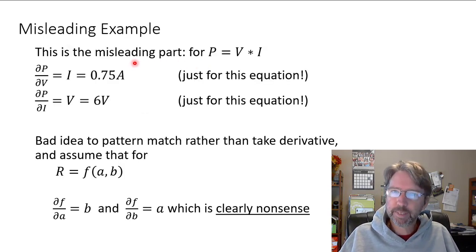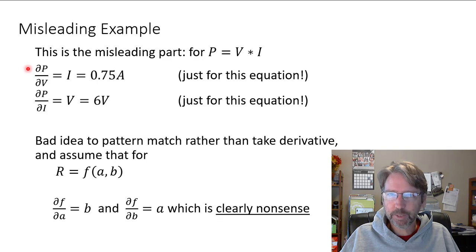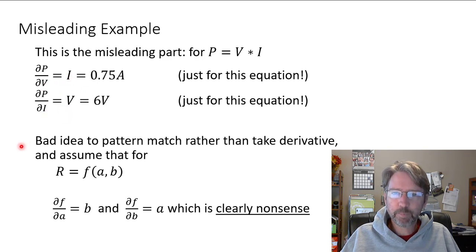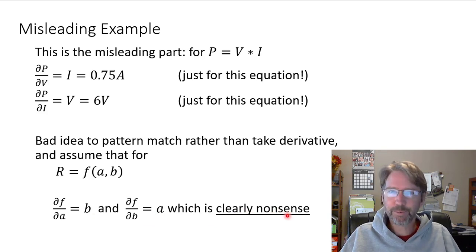This is why I call it a misleading example — students don't like to do calculus, but you have to; you're engineers. The misleading pattern here is: the partial of power with respect to voltage is current, and the partial of power with respect to current is voltage. People pattern-match that instead of actually taking the derivative — assuming that for a function of two variables, the partial with respect to the first is the second, and vice versa. That's clearly nonsense. Don't do that. Use your math skills.